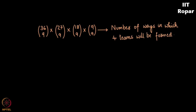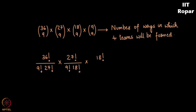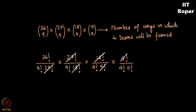Let me calculate. This becomes 36! / (9! × 27!) into 27! / (9! × 18!) into 18! / (9! × 9!) into 9! / (9! × 0!). After simplification what remains is 36! / (9! × 9! × 9! × 9!). So in these many ways 4 teams can be formed with 9 girls in each team.